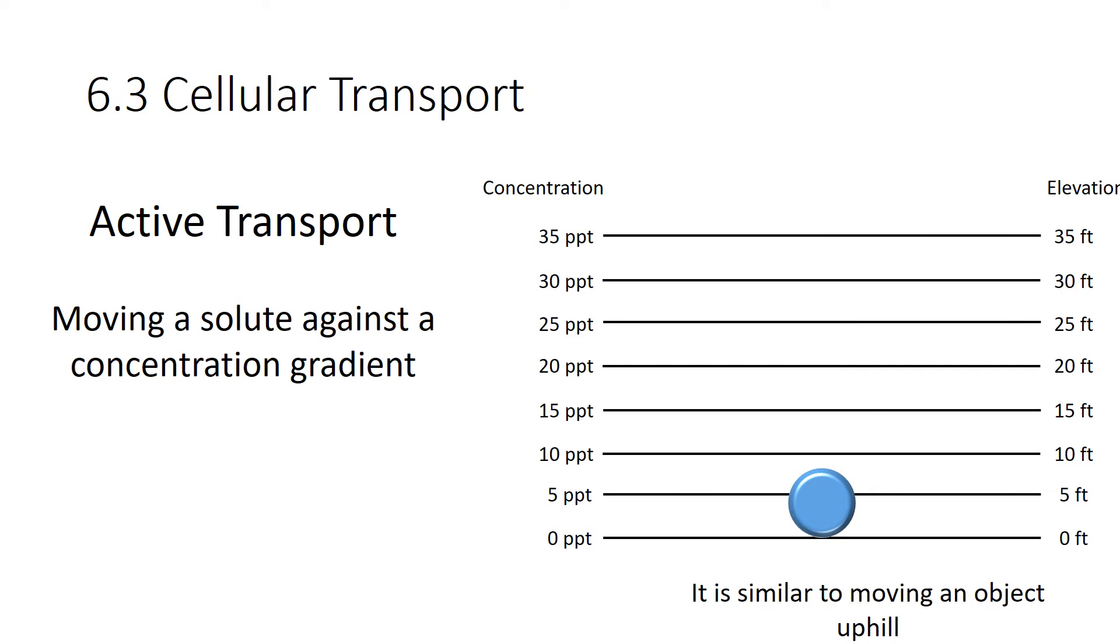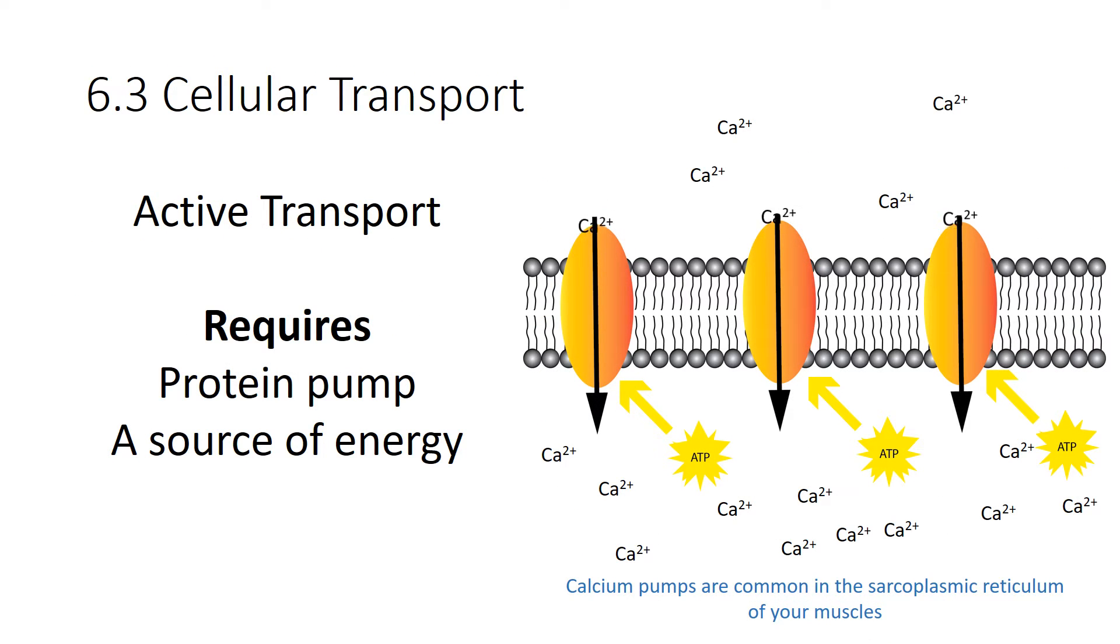One other type of cellular transport is active transport. Here you're going to move a solute against a concentration gradient. Now, this is similar to kicking a ball up a hill. You need a couple things here. Active transport, where we're going to move these calcium ions against their concentration gradient, requires a protein pump and a source of energy. You have to have both of them. The protein pump physically moves the calcium ions from one side of the membrane to the other. And the source of energy allows you to do it against this concentration gradient. And these calcium pumps, they're common in your muscles, specifically in the sarcoplasmic reticulum. That's part of your smooth ER that stores calcium ions. So, every time your muscles relax, the sarcoplasmic reticulum pumps calcium ions back inside, outside of the cytoplasm.